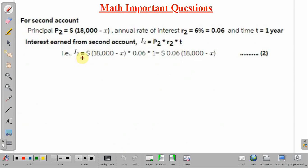Interest we can calculate as P2 times R2 times T. So, I2 will be obtained by substituting P2, R2 and T here. We will get 0.06 times (18,000 minus X). This is our equation number 2.